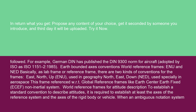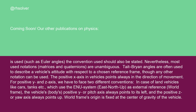World reference frames for attitude description: to establish a standard convention to describe attitudes, it is required to establish at least the axes of the reference system and the axes of the rigid body or vehicle. When an ambiguous notation system is used, such as Euler angles, the convention used should also be stated. Nevertheless, most used notations — matrices and quaternions — are unambiguous.